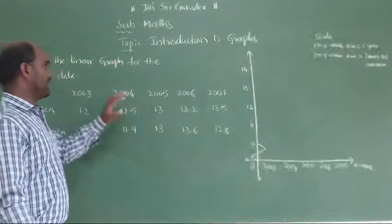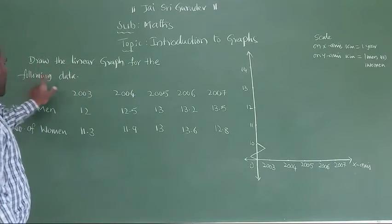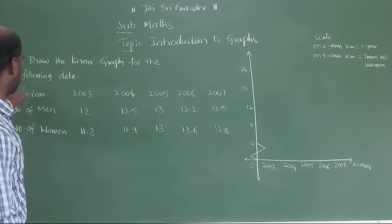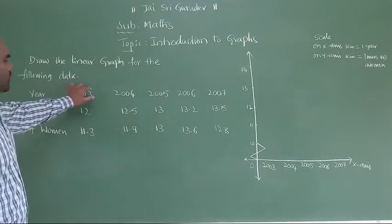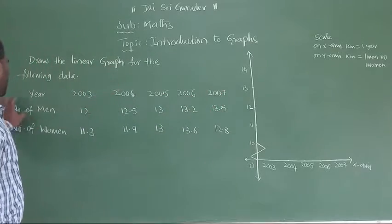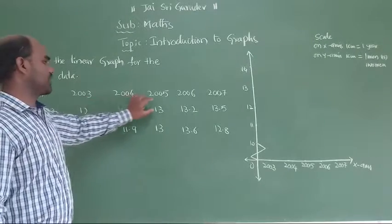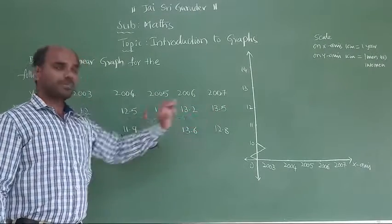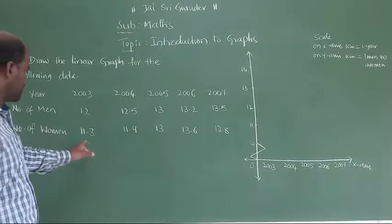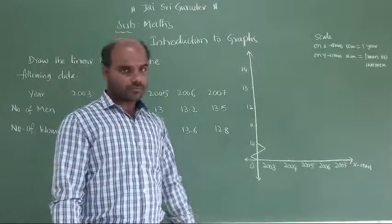You have to observe. Here, what we'll do is draw the linear graph of the data. The data shows the years: 2003, 2004, 2005, 2006, 2007. Number of men is 12.5, 13, 13.2, 13.5. Number of women is 11.3, 11.9, 13, 13.6, 12.8. So let us get with this information now.